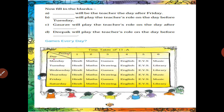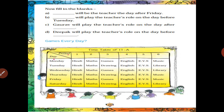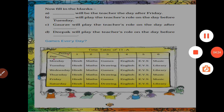Now fill in the blanks. Dash will be the teacher on the day after Friday. Friday is followed by Saturday, and on Saturday Rahma plays the teacher role. So write: Rahma.